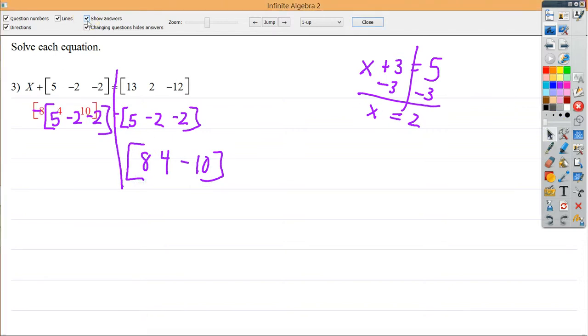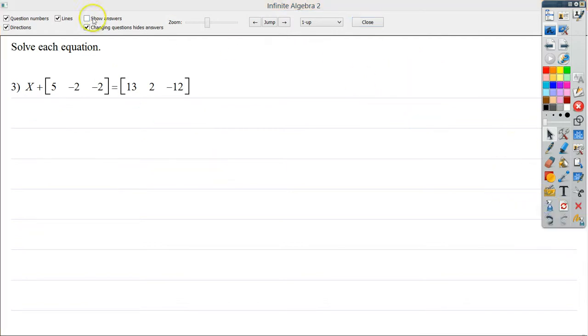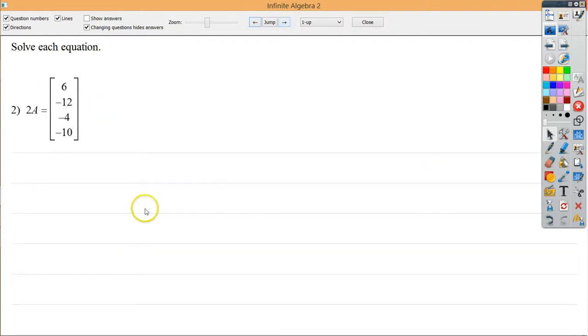I mean, really, not that complicated. So let's look at another one of similar style. Click back a couple. Now, actually, I want to save this one just a minute. So for number 2, you see that I have 2a is equal to this matrix.